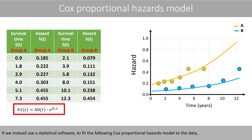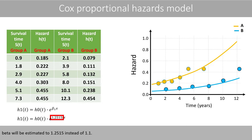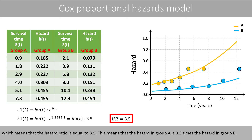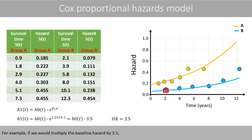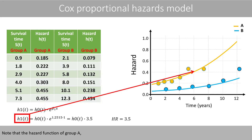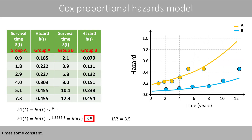If you instead use a statistical software to fit the Cox proportional hazards model to the data, beta will be estimated to 1.2515. e to the power of 1.2515 is approximately 3.5, which means the hazard ratio is equal to 3.5. This means that the hazard in group A is 3.5 times the hazard in group B. For example, if we multiply the baseline hazard by 3.5, we get the hazard of group A. The hazard at 10 years of the baseline group is 0.2, and multiplying by 3.5 gives the corresponding hazard of group A. The hazard function of group A is equal to the baseline hazard function times some constant.